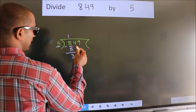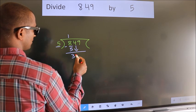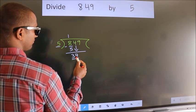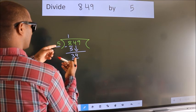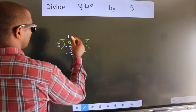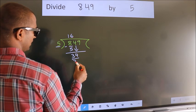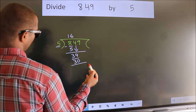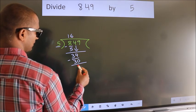After this, bring down the beside number. So 4 down. So 34. A number close to 34 in the 5 table is 5 times 6, 30. Now we subtract. We get 4.